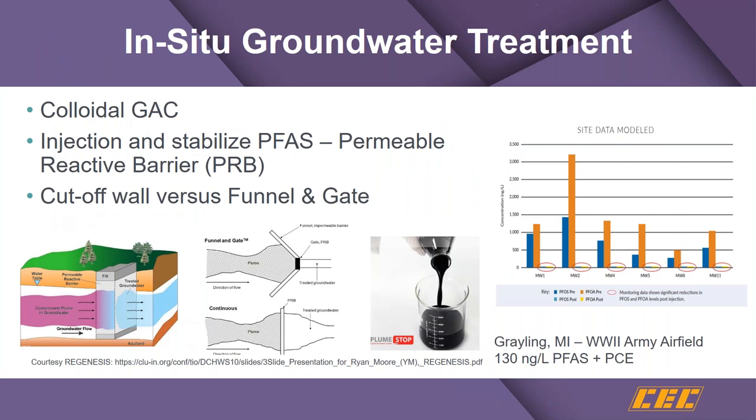It's also possible to produce in-situ groundwater treatment for PFAS without removal of the groundwater. This occurs through injection of material that adsorbs PFAS constituents in the ground. There is a colloidal granular activated carbon that can be injected into a groundwater treatment system with significant ability to remove PFAS. Sites in Michigan have shown this significantly removes PFAS constituents in an in-situ environment.